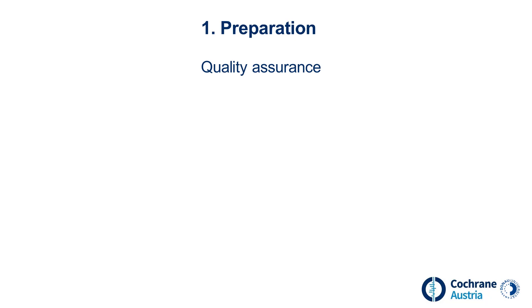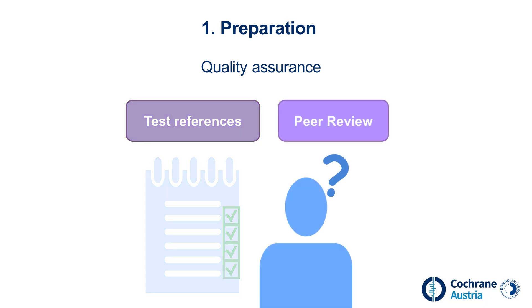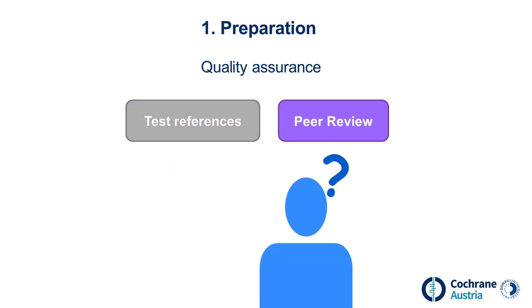There are two important methods for quality assurance. One: using test references to check whether the database search finds relevant studies that are already known from the preliminary search. And two: the peer review, where the search strategy is evaluated by a second person.